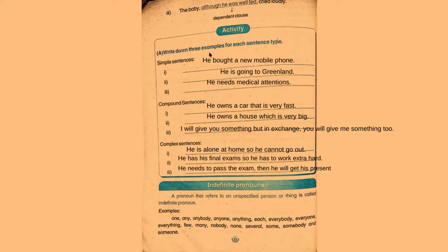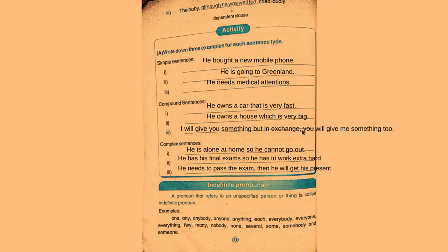Now write down three examples for each type. For simple sentences: 'He bought a new mobile phone.' 'He is going to Greenland.' 'He needs medical attention.' For compound sentences: 'He owns a car that is very fast' — 'that' is the conjunction. 'He owns a house which is very big' — 'which' is the conjunction. 'I will give you something, but in exchange, you will give me something too' — joined by a comma and conjunction.